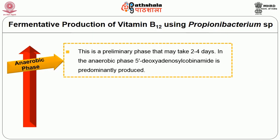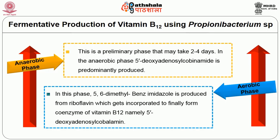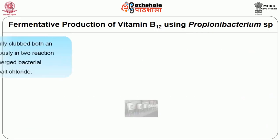The process is carried out by adding cobalt in two phases. In the anaerobic phase, a preliminary phase that may take two to four days, 5'-deoxyadenosyl cobinamide is predominantly produced. In the next aerobic phase, 5,6-dimethylbenzimidazole is produced from riboflavin, which gets incorporated to finally form the coenzyme of vitamin B12, namely 5'-deoxyadenosylcobalamin. In recent years some fermentation technologists have successfully combined both the anaerobic and aerobic phases to carry out the operation continuously in two reaction tanks. The bulk production of vitamin B12 is mostly done by submerged bacterial fermentation with beet molasses medium supplemented with cobalt chloride.